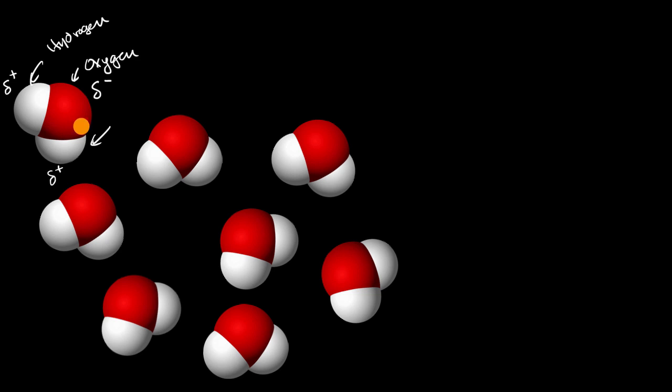And so you can imagine when you put a bunch of water molecules together, what might happen? Well, the partially positive side of one water molecule, where the hydrogens are, would be attracted to the partially negative side of another water molecule. And so they would be attracted. And this is known as a hydrogen bond.